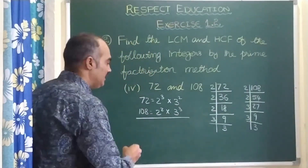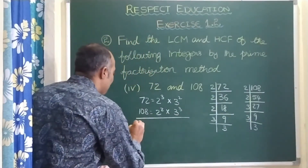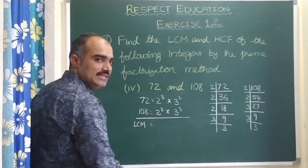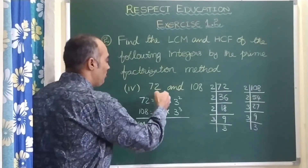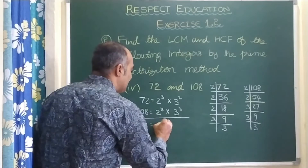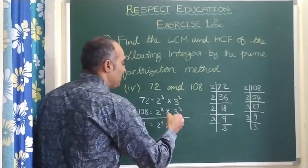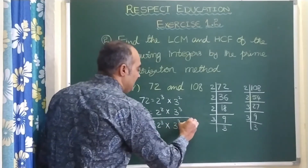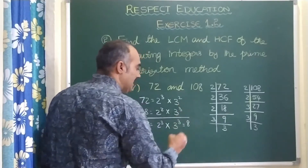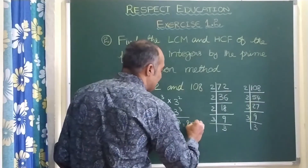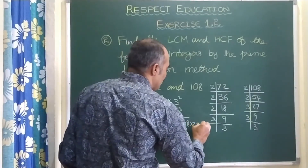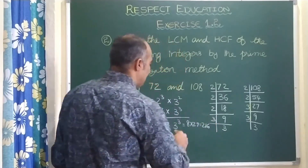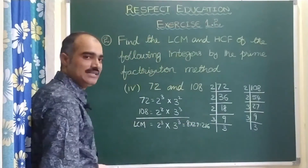Now let us write the LCM first. L is for least, but we should take the highest power. 2 power 3 and 2 power 2 — 2 power 3 is highest. 3 power 2 and 3 power 3 — 3 power 3 is highest. So it is 2 cube, which is 8, into 3 cube, which is 27. When you multiply, you will get 216. LCM is 216.